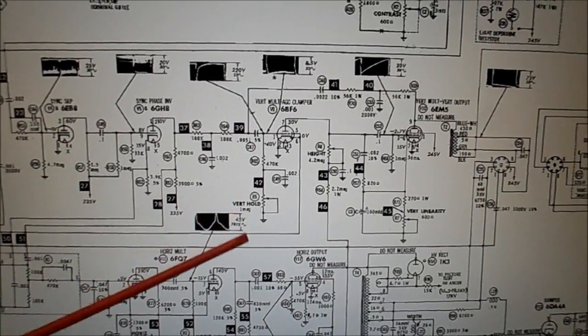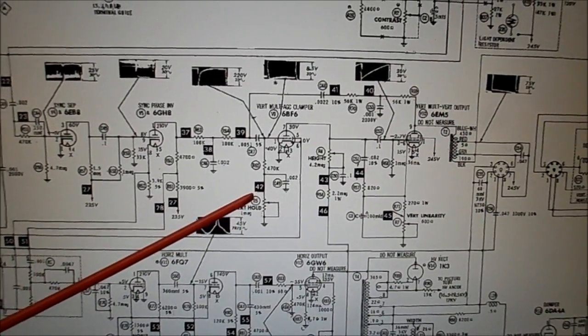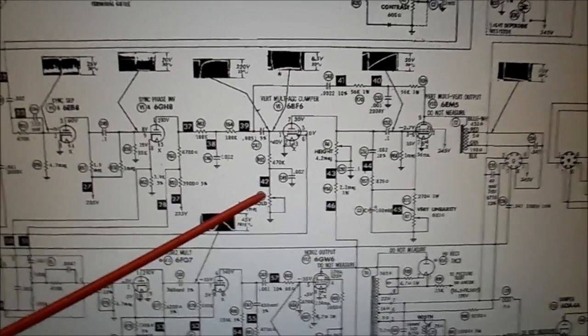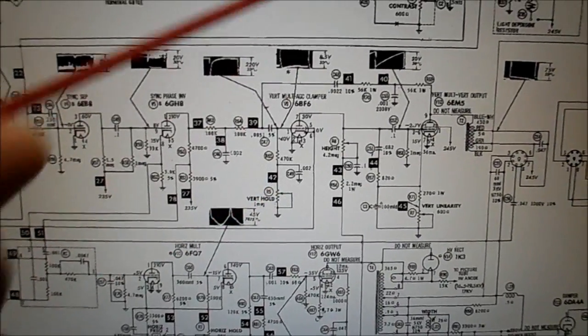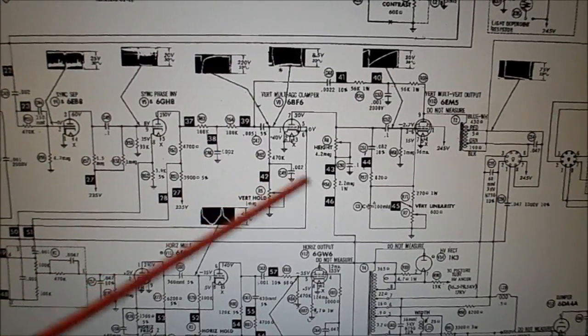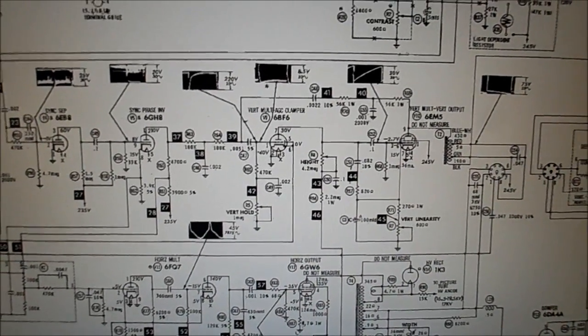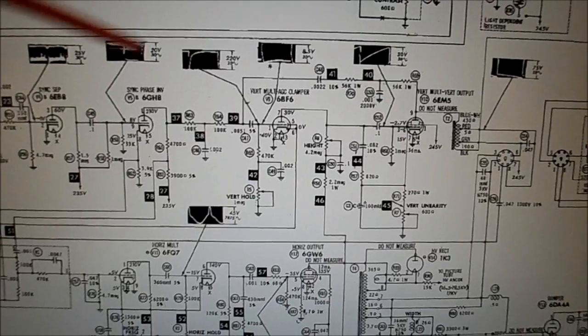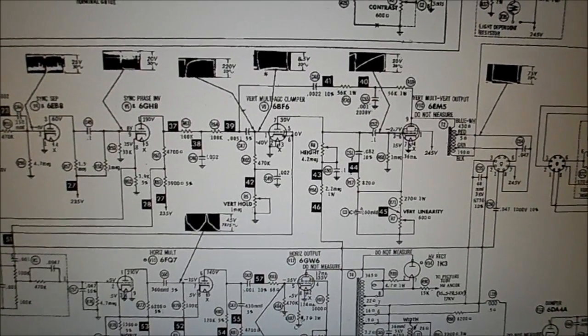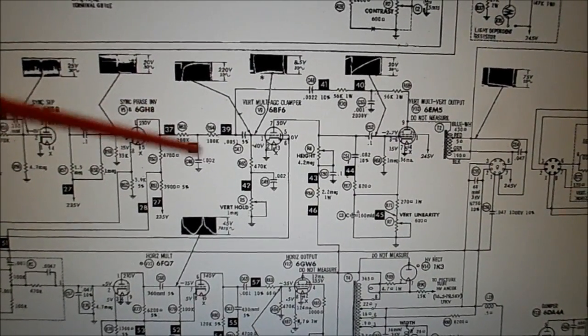All I did was I took a control cleaner, which is safe for potentiometers and most plastics. I cleaned the top controls, the contrast, the vertical hold, I took the horizontal hold, and the brightness. Just very sparingly put a couple drops of the deoxid cleaner in there. I'll show you in a minute.